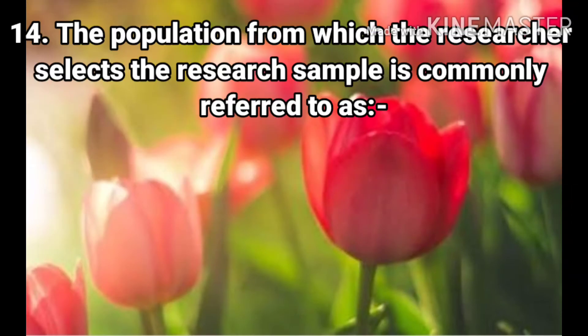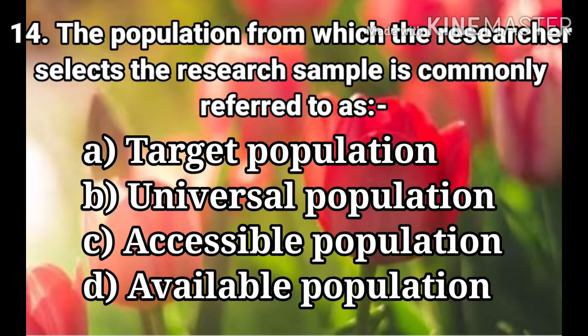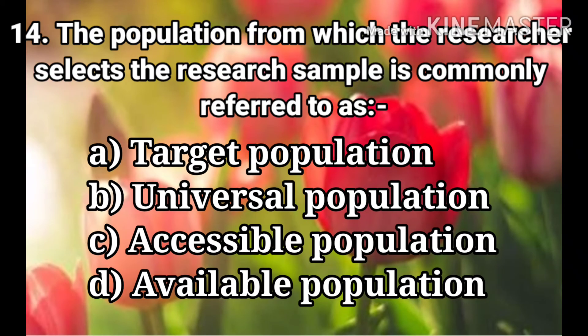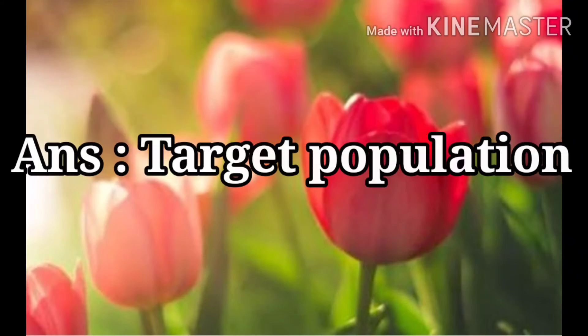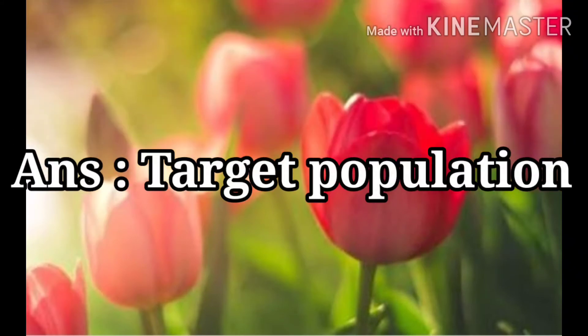Question 14: The population from which the researcher selects the research sample is commonly referred to as. The options are Target Population, Universal Population, Accessible Population, and Available Population. The answer is Target Population.